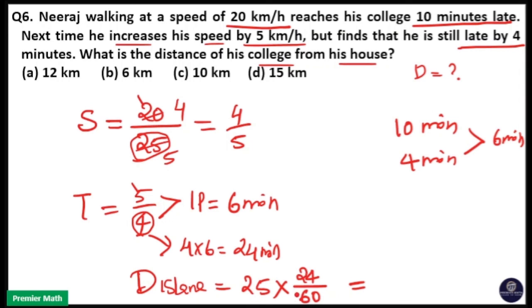That is 24 by 60. So 12 times 5 is 60, 12 times 2 is 24, 5 times 2 is 10. So 10 km is the distance, option C is your answer.